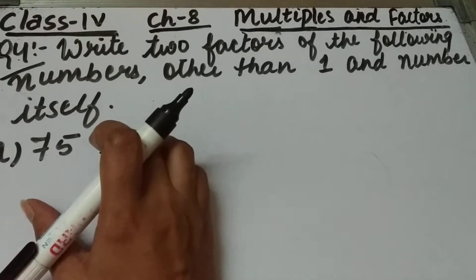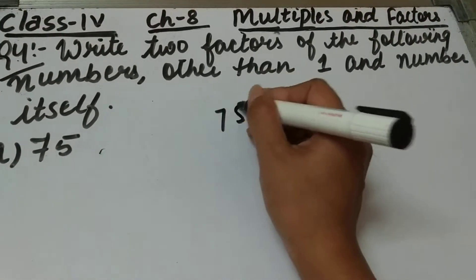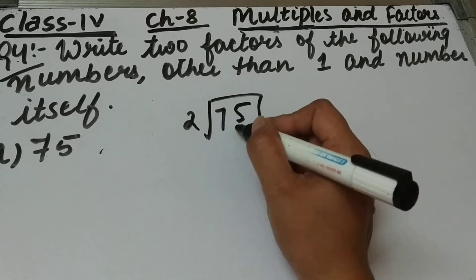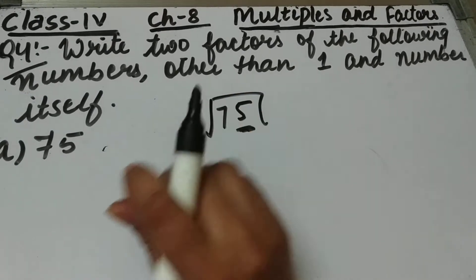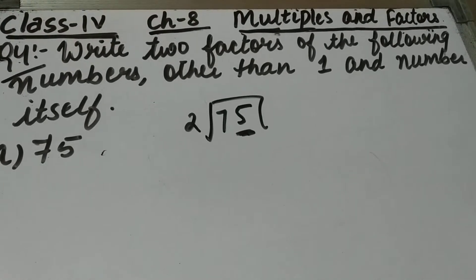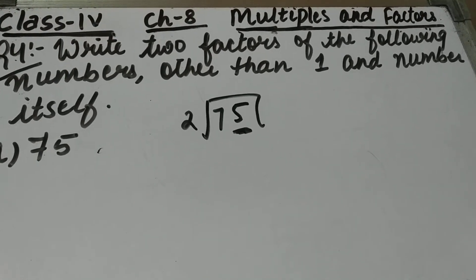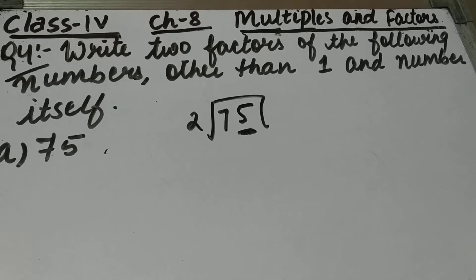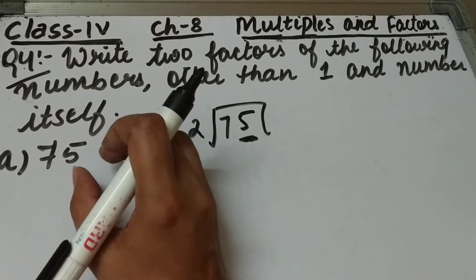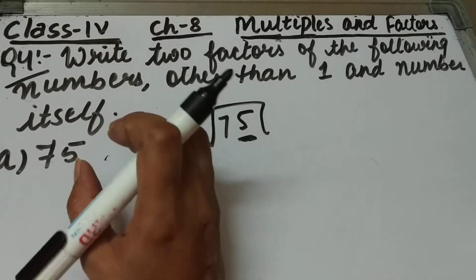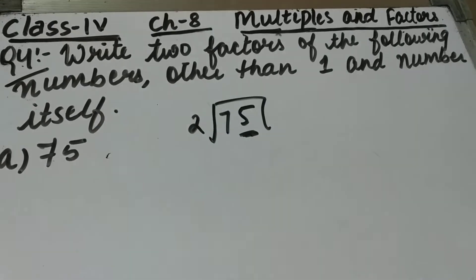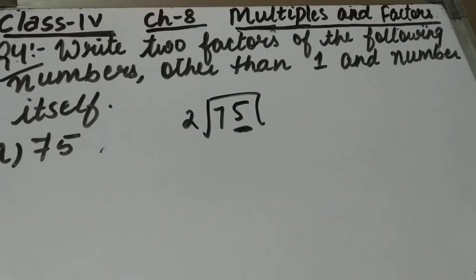First of all we will check whether 2 is a factor of 75 or not. The 1's place is 5, that means 2 is not a factor of 75, because for a number to be divisible by 2 the 1's place should be even. Only even numbers are divisible by 2, and 75 is an odd number, so 2 is not a factor of 75.